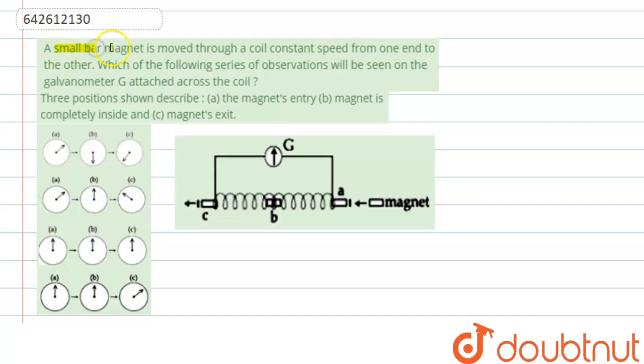Question says that a small bar magnet is moved through a coil with constant speed from one end to the other. Which of the following series of observations will be seen on the galvanometer attached across the coil?